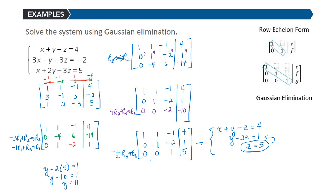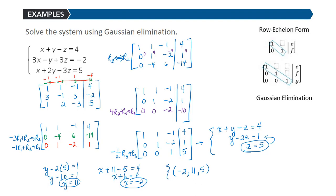Now I know z and y, so I can find x by substituting into the first equation: x plus 11 minus 5 equals 4, which gives x plus 6 equals 4, so x equals negative 2. The solution of this system is the ordered triple negative 2, 11, and 5. I could plug those into each of the equations to verify they give a true statement.